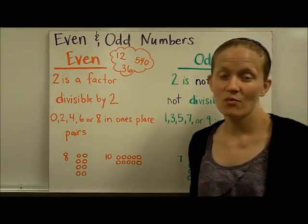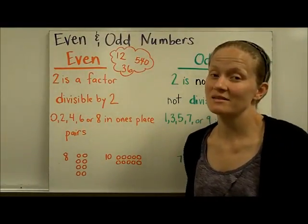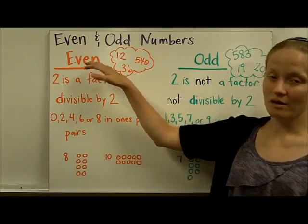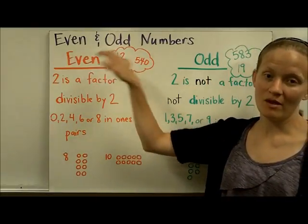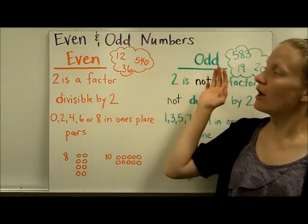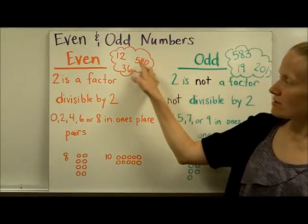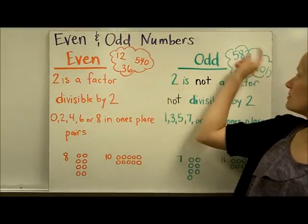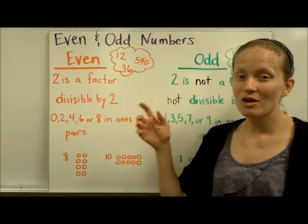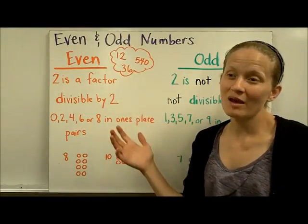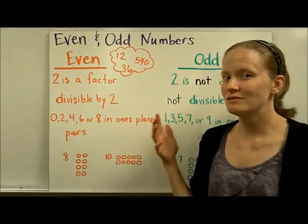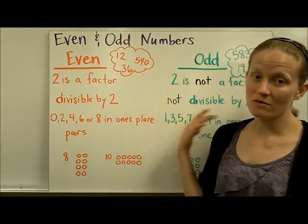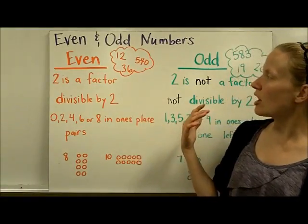Even and odd numbers. One way we can classify whole numbers is by talking about whether or not they are even or odd. Here are some examples of even numbers and some examples of odd numbers. We're going to compare using lots of different descriptions what makes a number even or what makes a number odd.